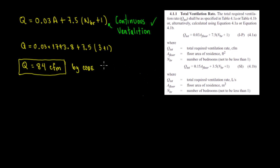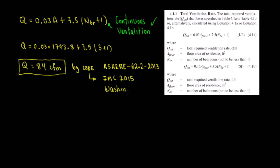But whenever I'm saying 'by code,' it doesn't mean ASHRAE 62.2-2013 by itself. By code means by IMC — International Mechanical Code 2015. Why? Because based on the location — this is located in Washington, DC — and it's very important to establish this: the Washington DC code is IMC 2015, which references ASHRAE 62.2-2013 standard. And that's how we obtain 84 CFM.